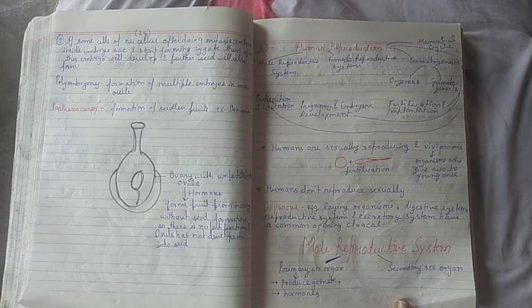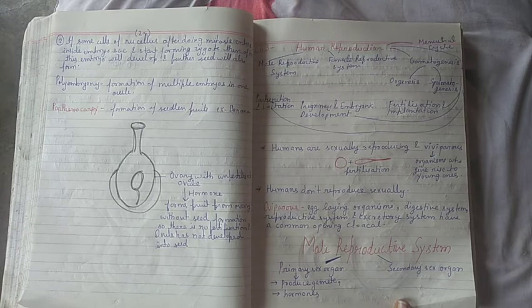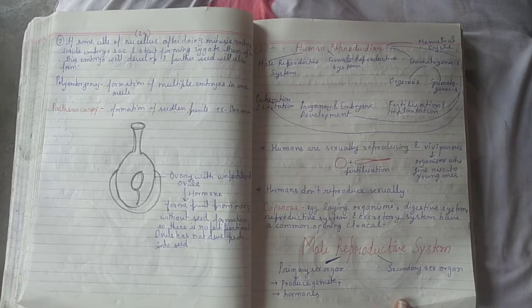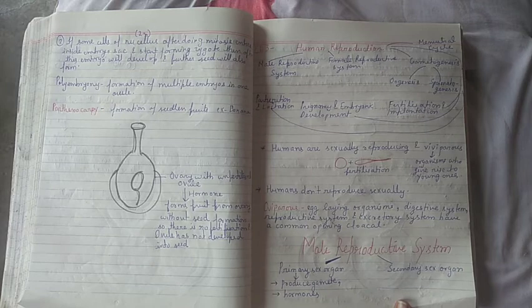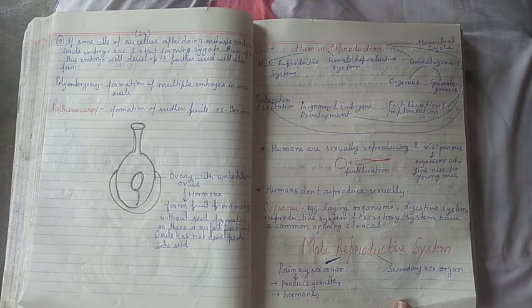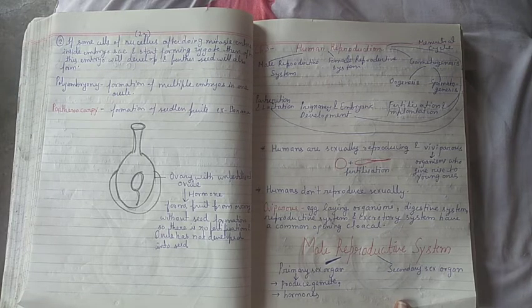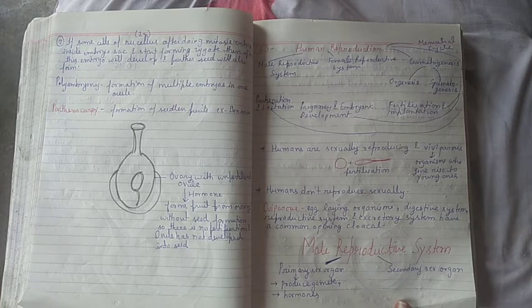In this chapter we are going to discuss first the male reproductive system, then the female reproductive system, then gametogenesis. Gametogenesis means formation of male and female gametes, in which we will study two processes: oogenesis and spermatogenesis. Oogenesis means formation of eggs and spermatogenesis means formation of male sperms.